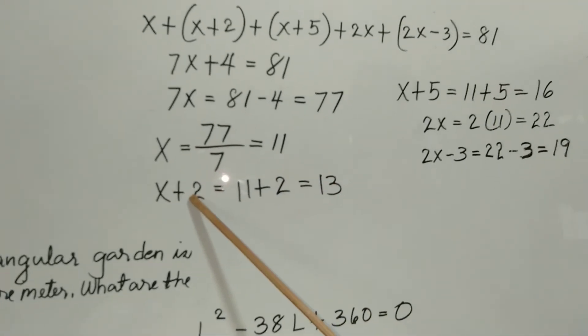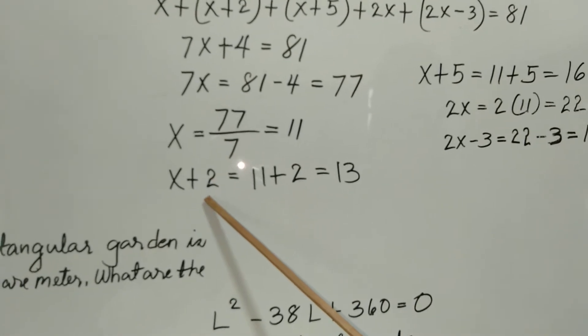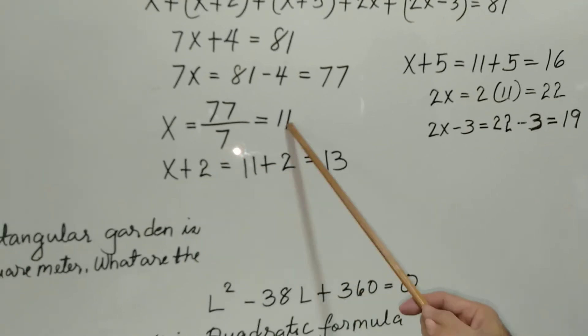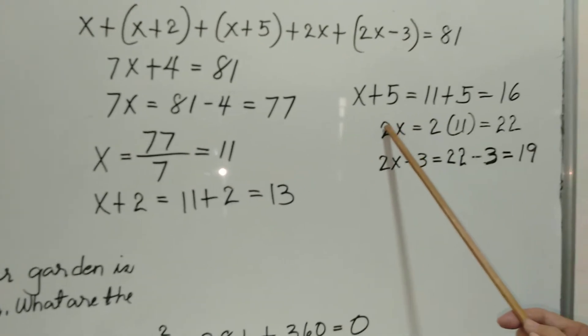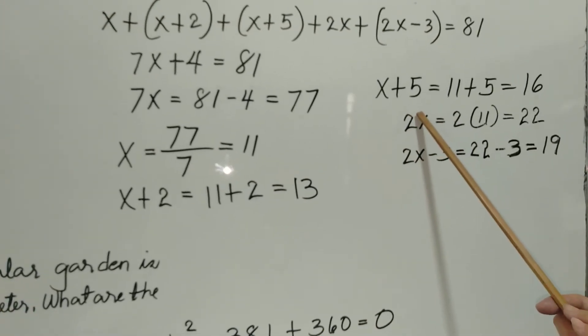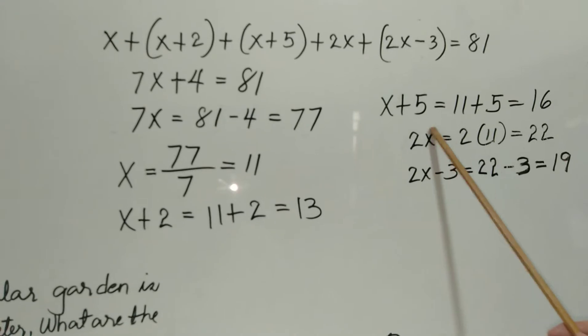For our second side, we add 2 units. So 11 plus 2 is 13. And for the third side, we have x plus 5. So 11 plus 5 is 16.